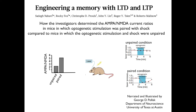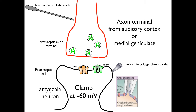Now I'm going to explain how the investigators determined the AMPA to NMDA current ratios in mice in which optogenetic stimulation was paired with shock compared to the mice in which the optogenetic stimulation and shock were unpaired. This slide shows a synapse made by an axon from the auditory cortex or the mediogeniculate on an amygdala neuron. The axon is transfected with channelrhodopsin. An electrode is patched on the amygdala neuron and will record synaptic currents in voltage clamp mode. The membrane is clamped at minus 60 millivolts.